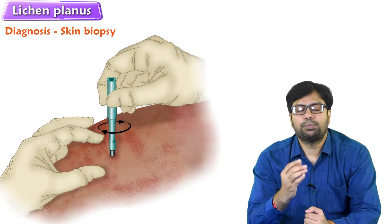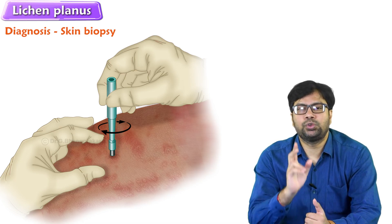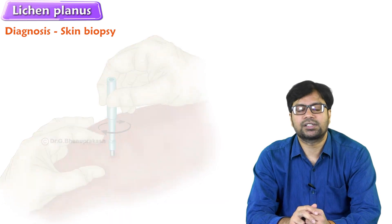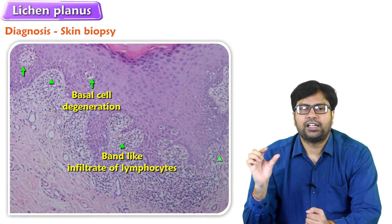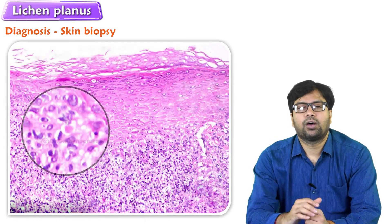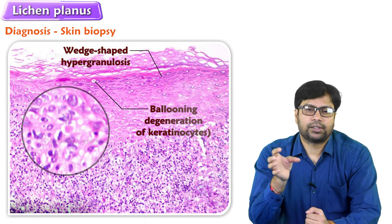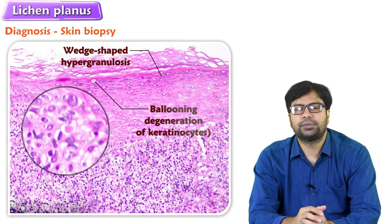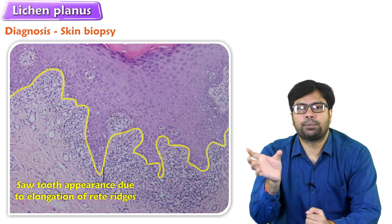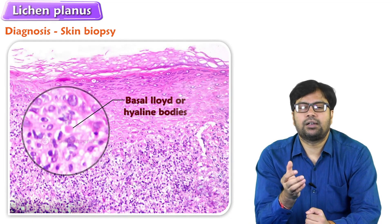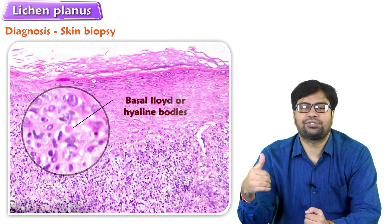In biopsy, what should you look for to confirm lichen planus? Two things are common for all types: basal cell degeneration with a band-like infiltrate of lymphocytes. Along with that: wedge-shaped hypergranulosis, ballooning degeneration of keratinocytes, elongation of rete ridges with a saw-toothed appearance, and basaloid or hyaline bodies should be looked for in different types of lichen planus.